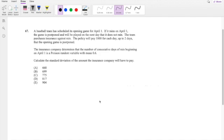So a baseball team has a schedule with opening on April 1st. So April 1st is the first day. And they tell you that the insurance company determines the number of consecutive days of rain beginning on April 1st. So April 1st is actually the first day. And then on that first day, they're going to pay $1,000. And on the second day, they're going to pay $2,000. April 2nd, let's say.